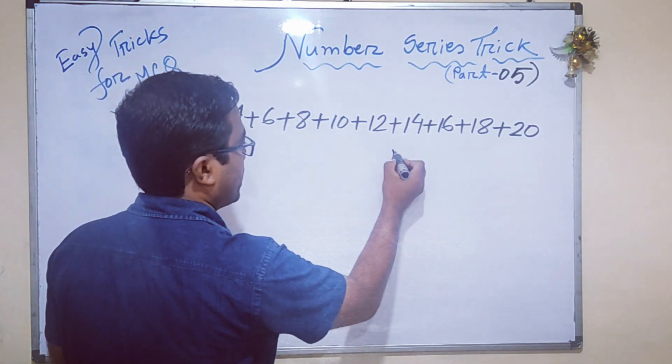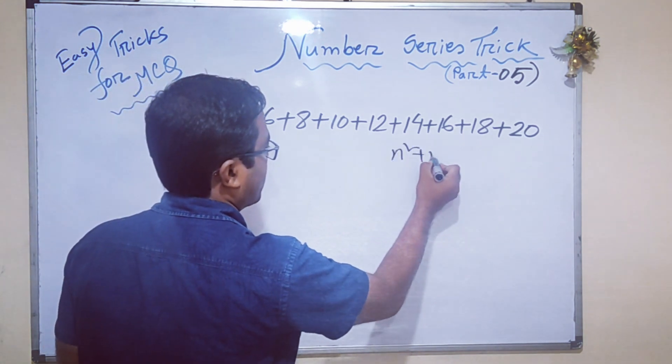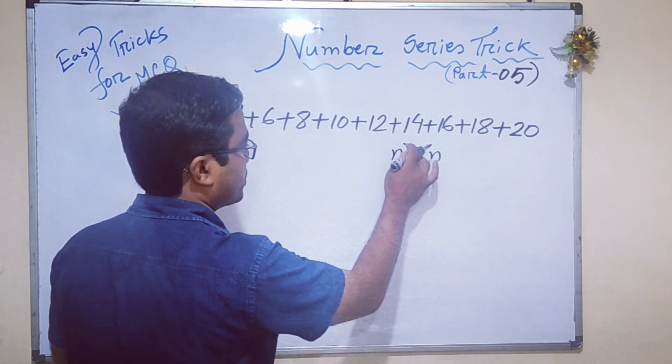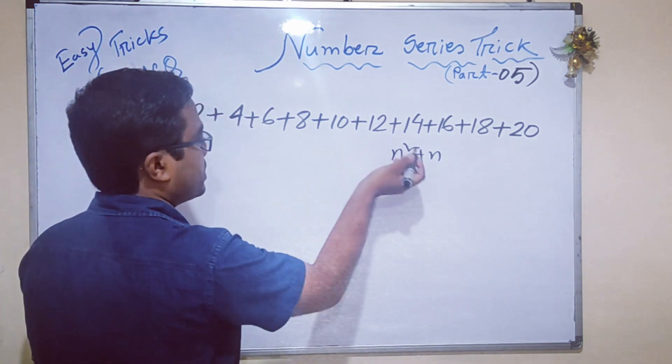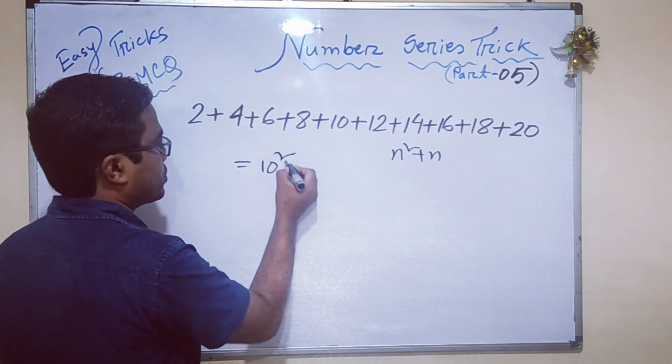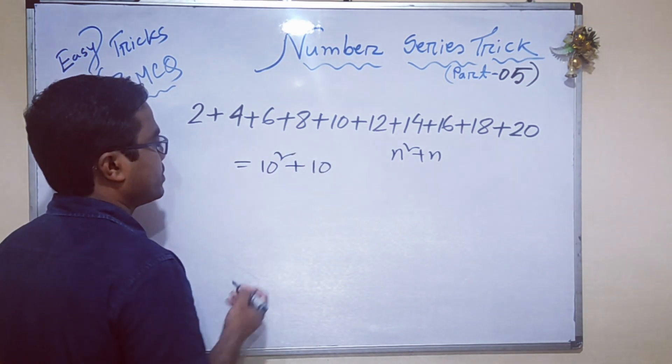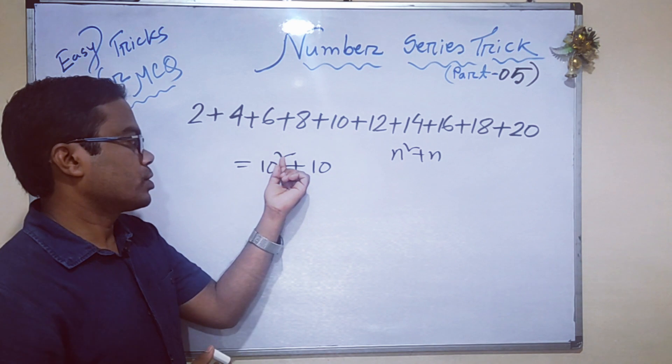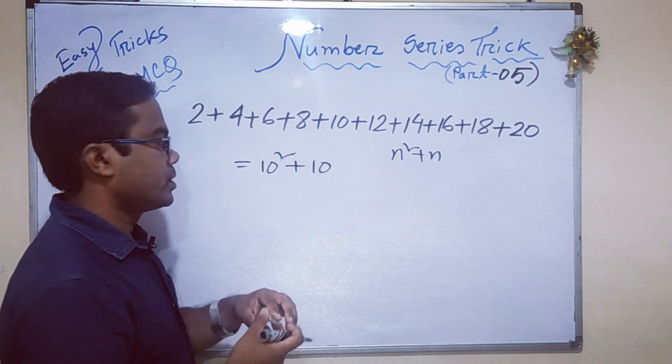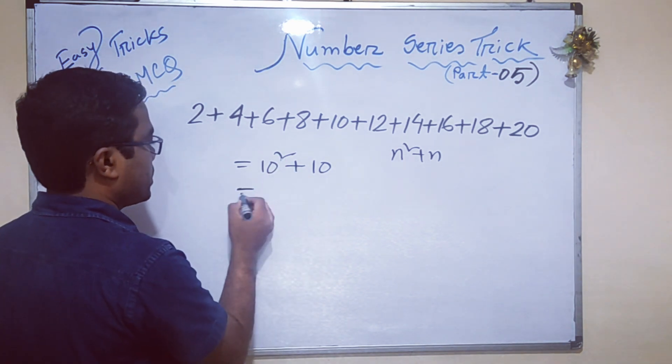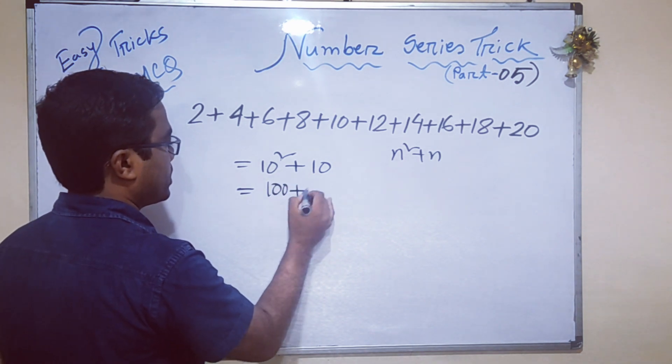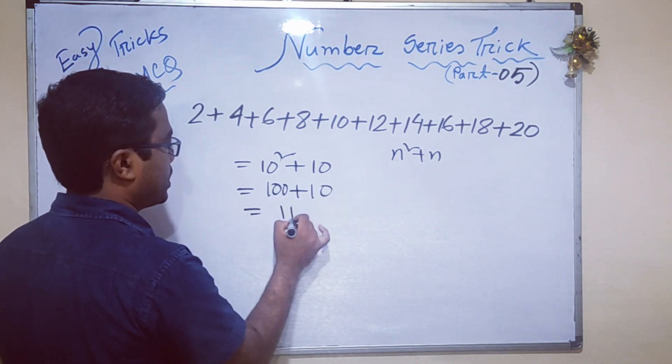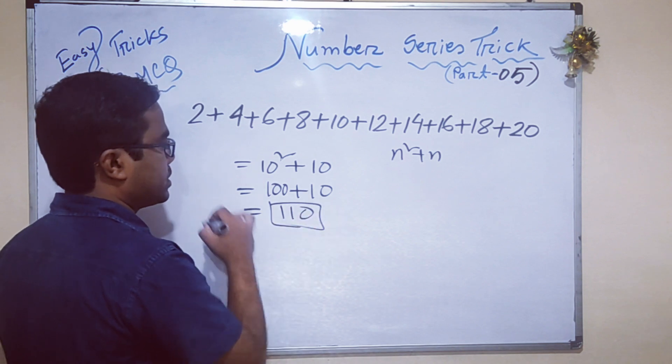I'm going to show you the formula I got. It's n² + n, where n is number of terms. The n means 10, so 10² + 10. Okay, 10² means 10 times 10 = 100 plus 10, so 110. This is the required result.